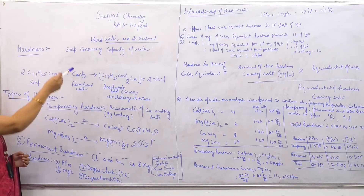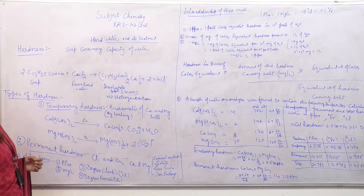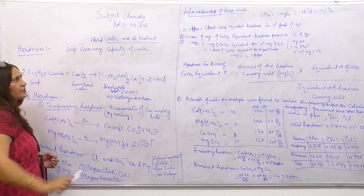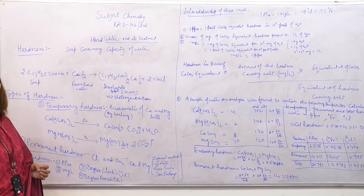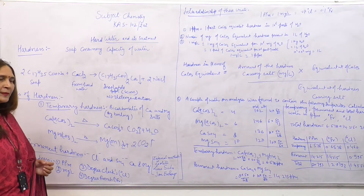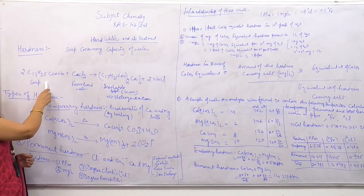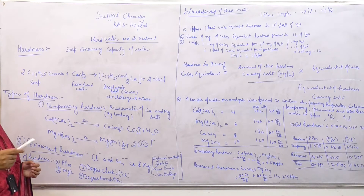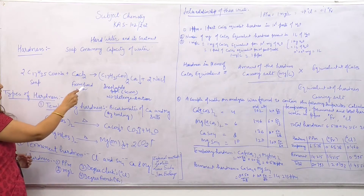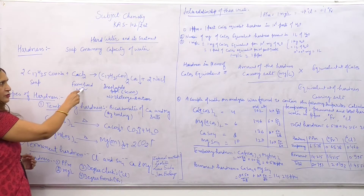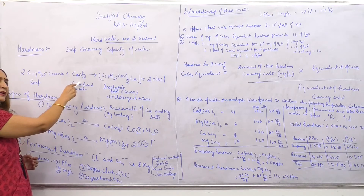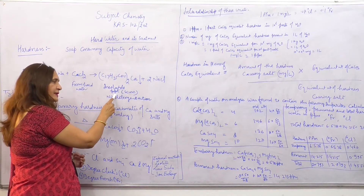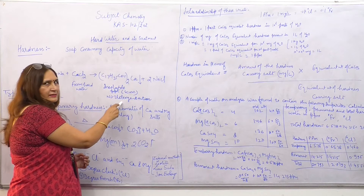What is hardness and what is the definition of hardness? Hardness is the characteristic property of water — it means the soap-consuming capacity of water. It does not produce lather with soap. Soap is a long chain of fatty acids. Stearic acid, palmitic acid, and oleic acid react with hard water causing salts, that is calcium chloride or magnesium chloride, and give calcium stearate as an insoluble precipitate. It means there is no detergent action.